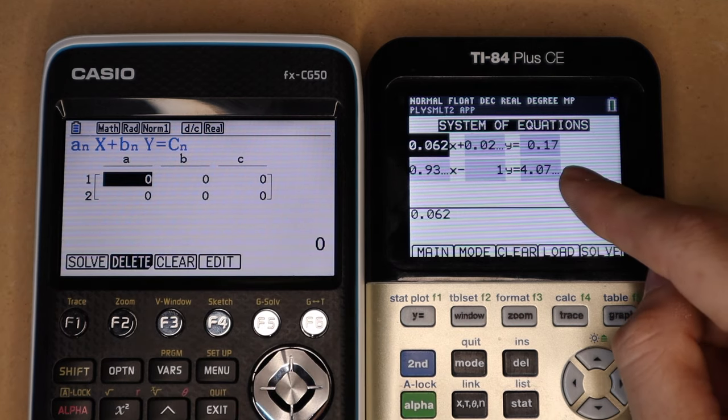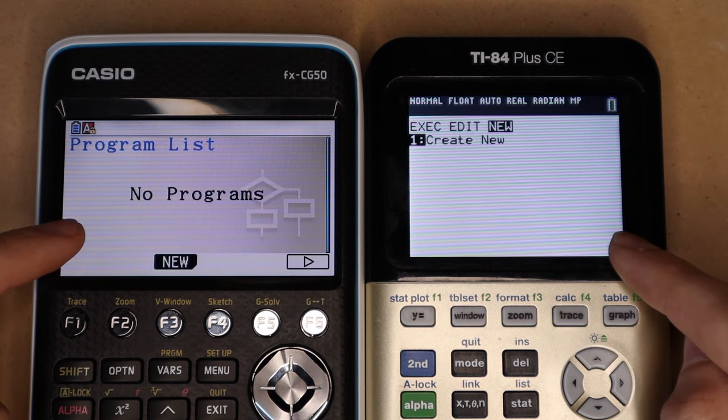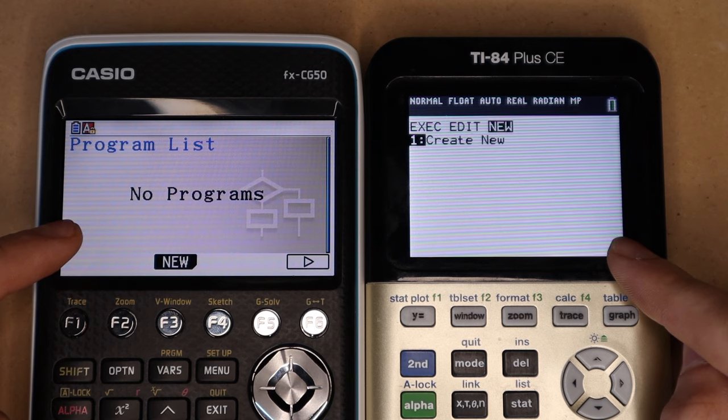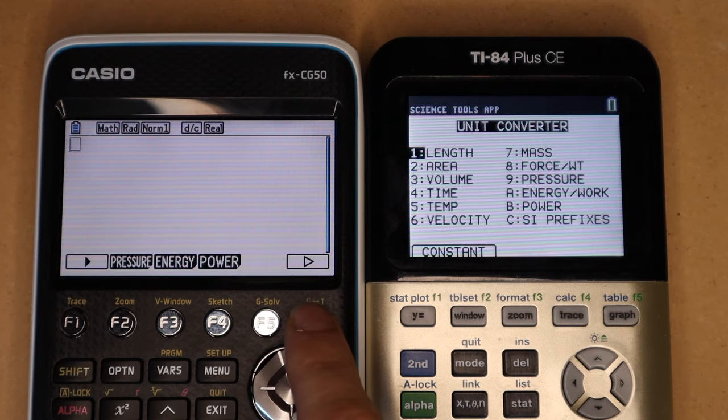This type of layout on the TI-84 Plus is, in my opinion, easier to understand. Both calculators, in my opinion, have very capable and comparable programming interfaces for creating your own programs. Both have apps for common financial functions. Both have apps for unit conversion and more.